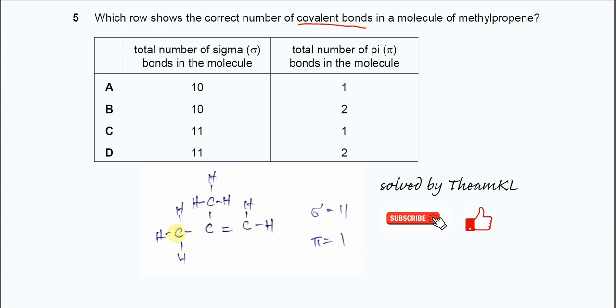Three carbon main chain, one, two, three. There is one methyl group as a substituent here. So, this is the methylpropene. Let's count the total sigma bond first. When you see the single bond, all these single bonds, they are sigma bonds.